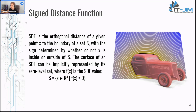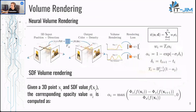SDF stands for Signed Distance Function, and the SDF of any given point x is the signed orthogonal distance to the closest surface. The sign is determined by whether or not x is inside or outside of the surface. The surface of an SDF can be represented by a set of points x where the SDF value of x is zero. To allow for a NeRF-like optimization, an opacity estimation formula is used.